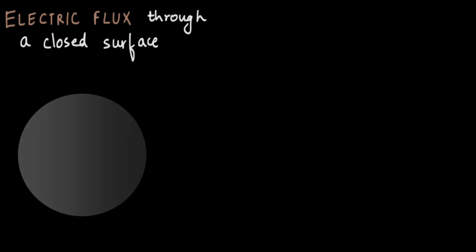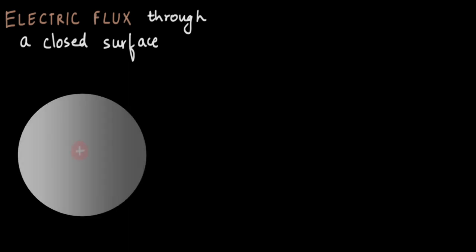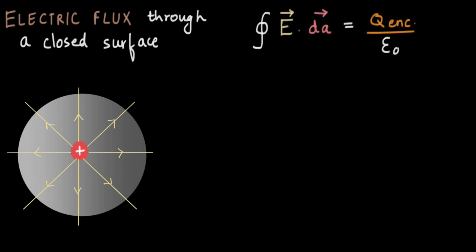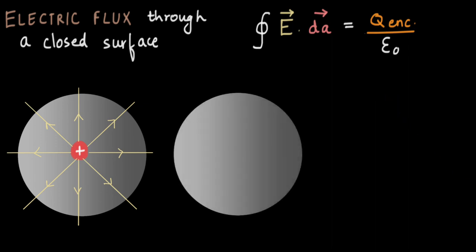In our previous videos, we looked at how to calculate electric flux through a closed surface. If we had a closed spherical surface and a positive charge in the center, the flux going through the surface would be given by the closed surface integral of the dot product between the electric field and area, which equals the charge enclosed divided by epsilon naught. Now, what if instead of a single positive charge — a monopole of electric charge — you take an electric dipole inside the Gaussian surface? What do you think the electric flux would be?